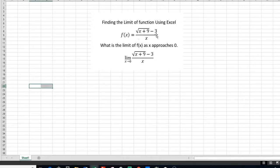This is the function we're going to focus on. This is actually a function from a pre-calculus homework that my grandson Charlie had. f of x is square root of x plus 9 minus 3 over x. We want to find the limit to that function as x approaches 0.